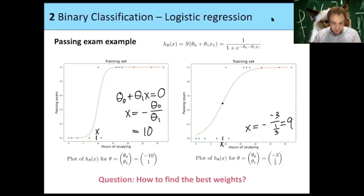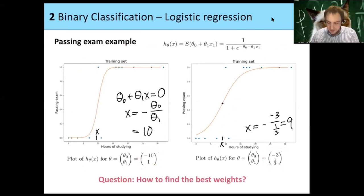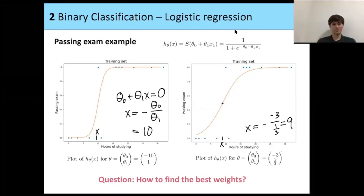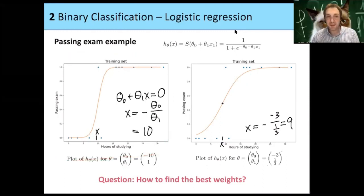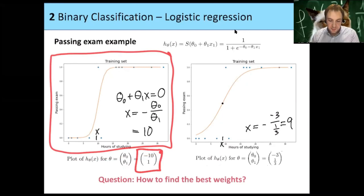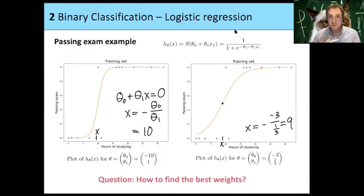The question is which of these is the better choice for our training set. A student guessed the first one (theta = −10, 1), and that's actually correct — we will see later that this theta has a larger likelihood and is therefore more likely to describe the training set.